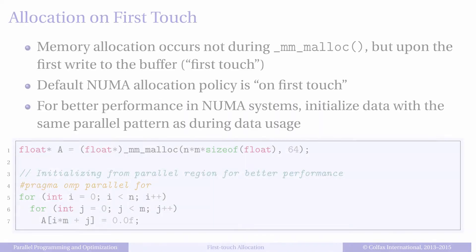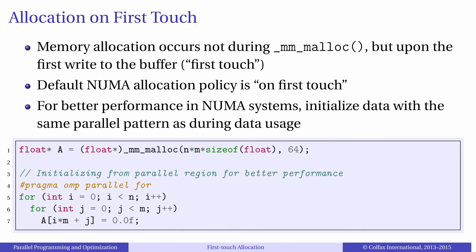In Linux, when you call malloc, you are telling the operating system that you intend to use a buffer of a certain size. However, the operating system does not create virtual memory pages during malloc. Pages are created and assigned to physical memory modules during first-touch — in other words, when your program writes data to the memory for the first time. The default allocation policy in Linux is the so-called first-touch allocation policy, which means that the NUMA node that touched a memory page first will get it allocated in its local memory.